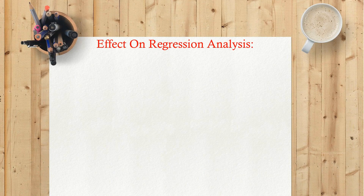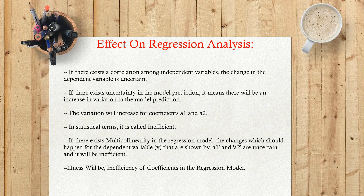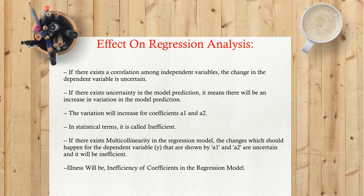Effect on regression analysis: if there exists a correlation among independent variables, the change in the dependent variable becomes uncertain. This uncertainty means there will be an increase in variation in model predictions — the variation will increase for coefficients A1 and A2. In statistical terms, this is called inefficiency. If multicollinearity exists in the regression model, the coefficients A1 and A2 become inefficient, meaning the changes they represent for the dependent variable Y are uncertain.